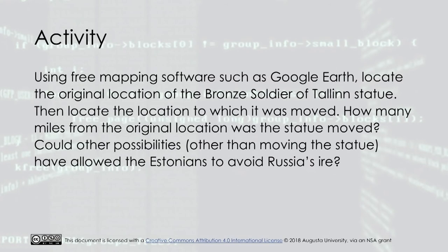The activity for this module asks that, using free mapping software such as Google Earth, you locate the original location of the Bronze Soldier of Tallinn statue, then locate the location to which it was moved. How many miles from the original location was the statue moved? Could other possibilities, other than moving the statue, have allowed the Estonians to avoid Russia's ire?